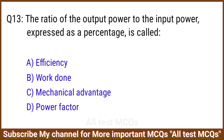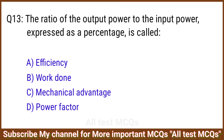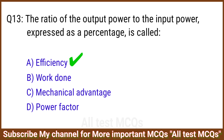Q13. The ratio of the output power to the input power expressed as a percentage is called? The correct answer is option A: Efficiency.